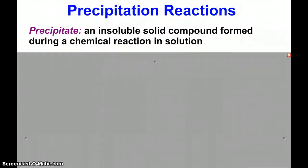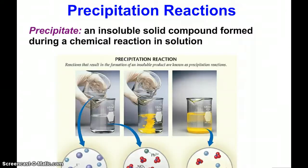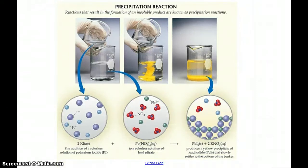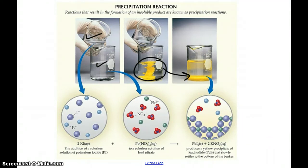Most of the reactions we look at in this course fall into one of three categories: precipitation, acid-base, and oxidation-reduction. Let's look at precipitation reactions first. A precipitate is an insoluble solid compound that forms during a chemical reaction that is in solution. If I mix potassium iodide with lead nitrate — potassium and iodide ions on the left, lead and nitrate ions in the middle — when they mix together, we start seeing the formation of a precipitate: solid lead(II) iodide. Above it in solution are the spectator ions, potassium nitrate.